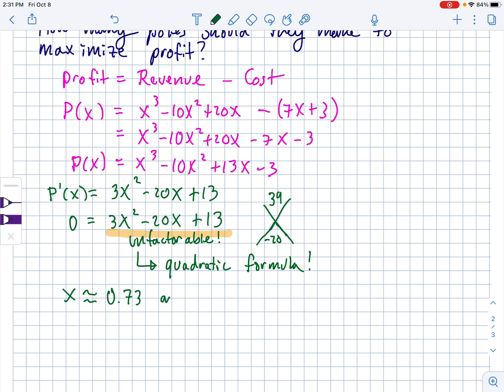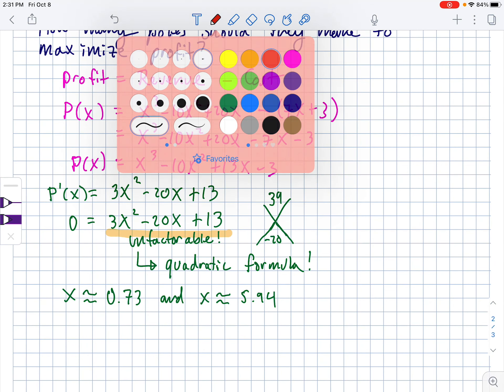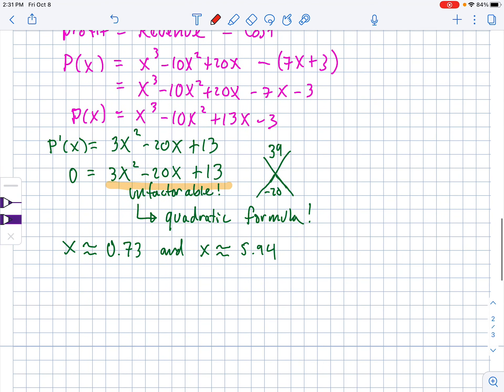So when you solve that, you will get X is about 0.73 and 5.94. Now, remember those are thousands of fishing poles that we just found. So we need to figure out which of those is a maximum and which is a minimum. I have a suspicion that it's one, one, one and one, that one's a max, one's a min. To be able to tell what's a max and a min, use the second derivative.